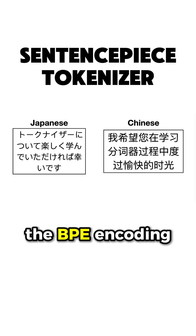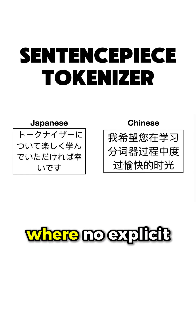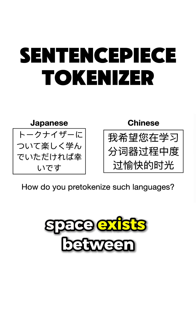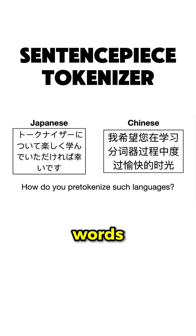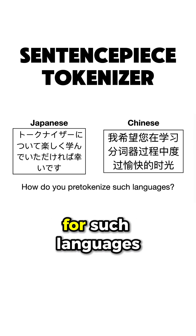Imagine that we want to use the BPE encoding for Japanese or Chinese, where no explicit space exists between words, so you'd have to implement different pretokenizers for such languages.